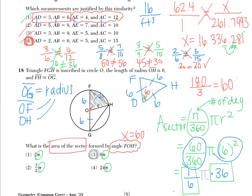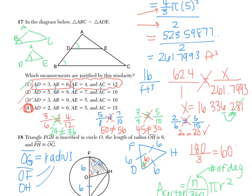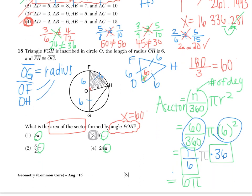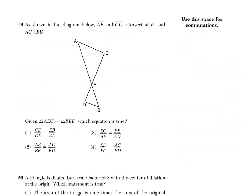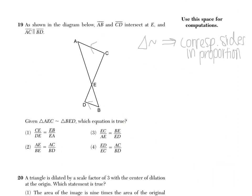So the answers for this page are: number 16 is choice 1, 17 is choice 4, 18 is choice 3. Number 19 says, as shown in the diagram below, AB and CD intersect at E, and AC is parallel to DB. Given that triangle AEC is similar to triangle BED, which equation is true? Because the triangles are similar, the corresponding sides are in proportion, so we must be consistent in how we set up our proportions.